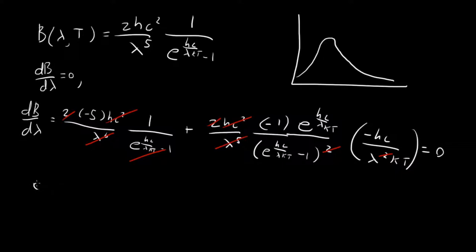So we have zero equal to minus five plus e to the hc over lambda kt times hc over lambda kt, and this whole thing's over another e to the hc over lambda kt minus one.